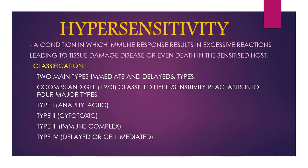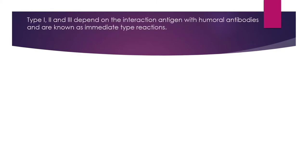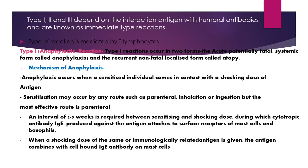The two main types of hypersensitivity are immediate and delayed types. According to Coombs and Gell's classification, hypersensitivity is of four major types: Type 1 is anaphylactic, Type 2 is cytotoxic, Type 3 is immune complex, and Type 4 is delayed or cell-mediated. Types 1, 2, and 3 depend upon the interaction of antigen with humoral antibodies — these are the immediate type reactions. Type 4 is mediated by T lymphocytes.